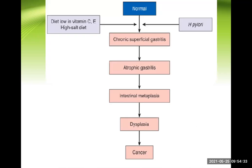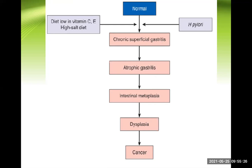Looking at this slide: H. pylori and a diet low in vitamins C and E, or high in salted, smoked, or preserved food, causes the normal gastric mucosa to develop chronic superficial gastritis. This may convert into atrophic gastritis, then intestinal metaplasia can occur, resulting in dysplasia and ultimately cancer. So first is inflammation, which can lead to metaplasia, then dysplasia, then cancer — a pathogenesis discussed in many other malignancies.